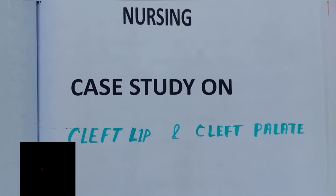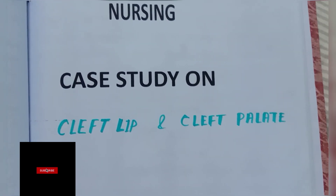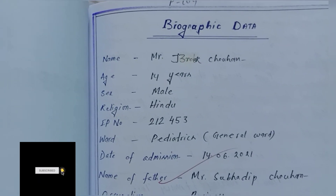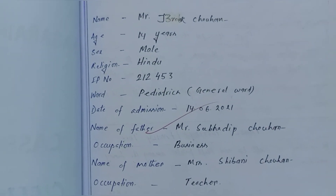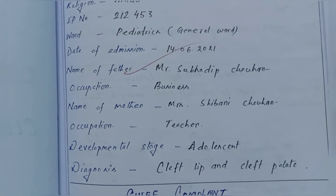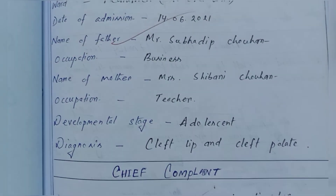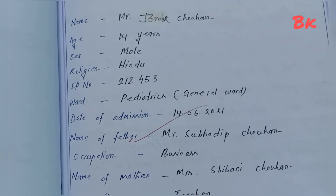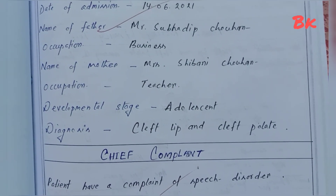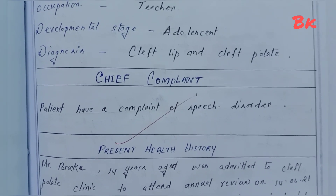Welcome back to my channel. In this video I will be sharing a case study on cleft lip and cleft palate. Biographic information: name Mr. Broke Chohan, age 14 years, sex male, religion, IP number, ward pediatrics, date of admission, name of father, father's occupation, name of mother, mother's occupation. Developmental age: adolescent — patient's age is 14 years so he comes under the adolescent group. Diagnosis: cleft lip and cleft palate. Chief complaints: patient has a complaint of speech disorder.